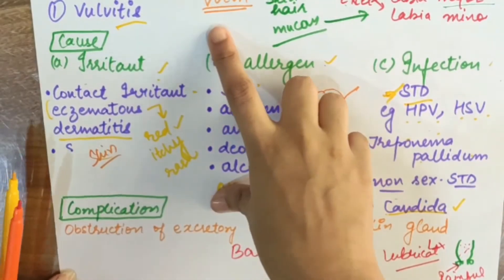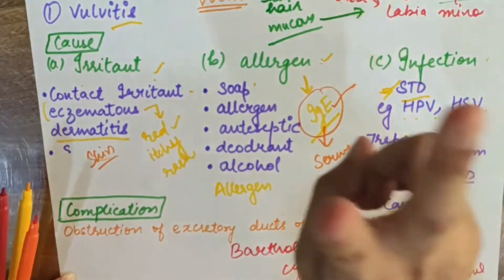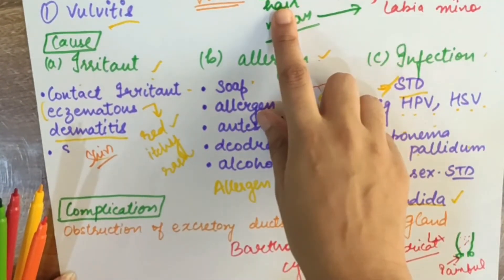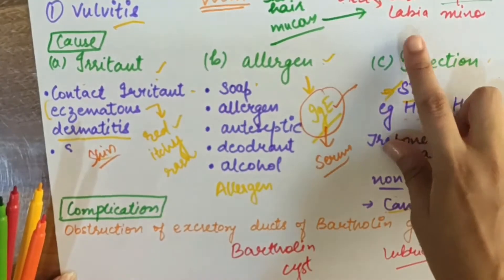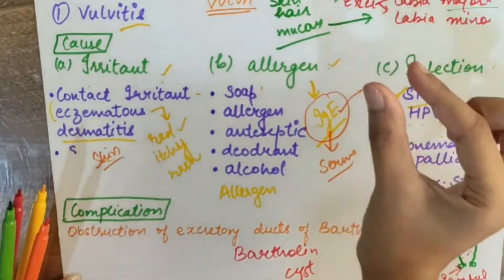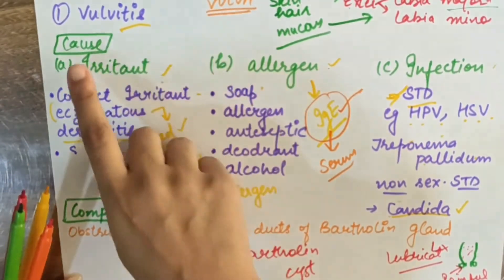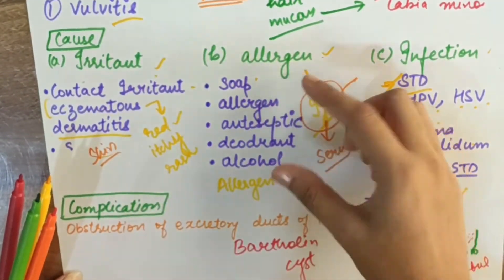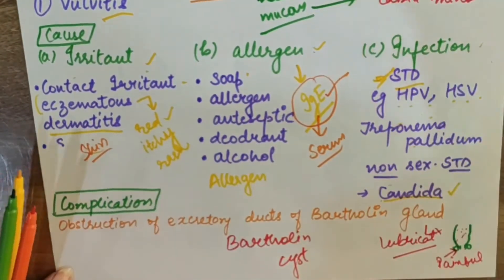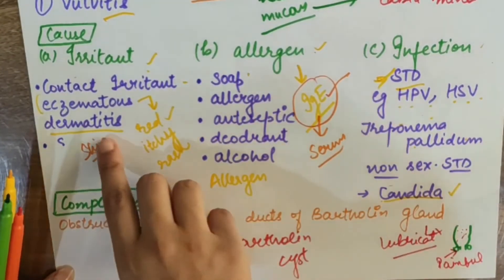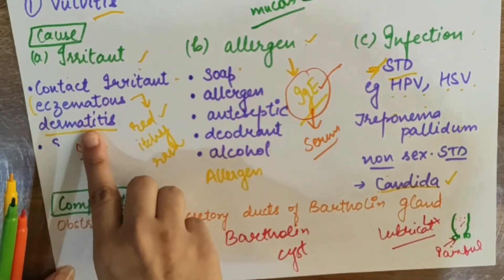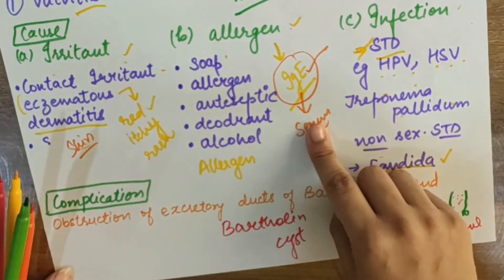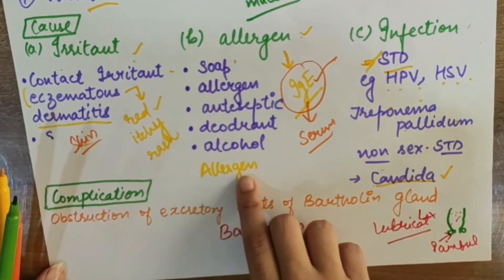Quick recap: vulva is the external female genital area divided into labia majora and labia minora. Labia majora is the hair-bearing skin part, and labia minora is the mucous part. Vulvitis is inflammation of the vulva with three causes: irritant, allergen, and infection. Irritant and allergen agents can be the same things - soap, antiseptic, deodorant. If caused by irritant, we call it irritant eczematous dermatitis; if by allergen, we call it allergic dermatitis, which involves an immunoglobulin reaction.